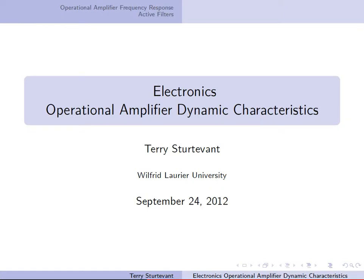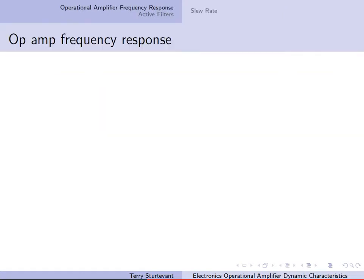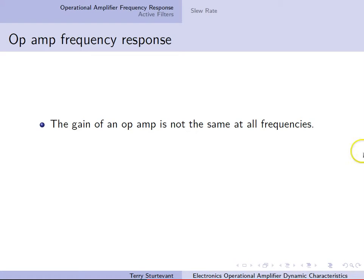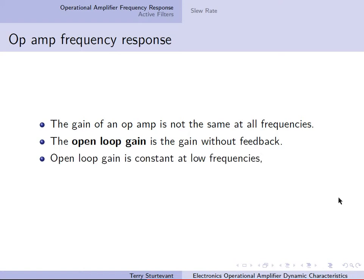This video is about the dynamic characteristics of operational amplifiers. The gain of an operational amplifier is not the same at all frequencies. The open-loop gain is the gain without feedback. The open-loop gain is constant at low frequencies, but then starts to decrease at higher frequencies.